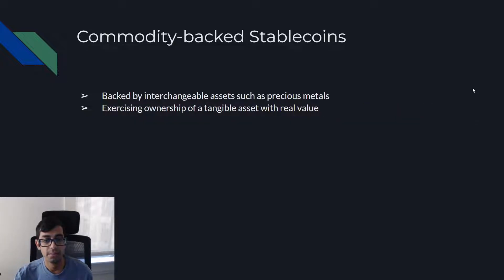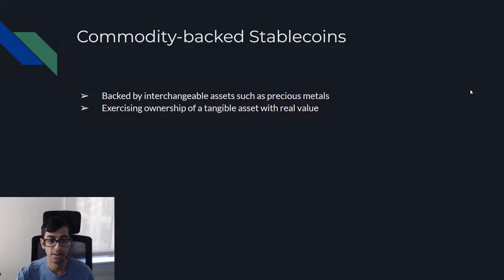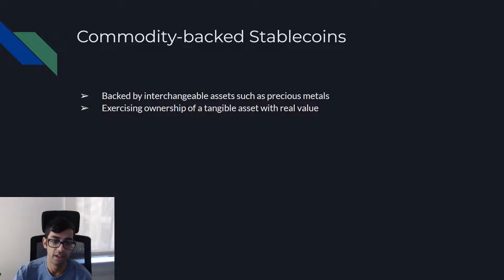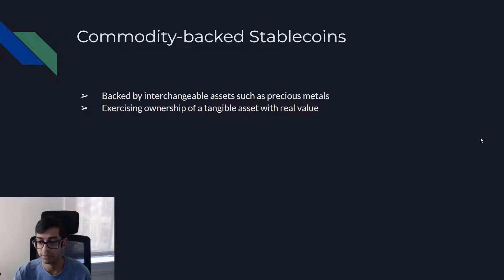Commodity-backed stablecoins are backed by interchangeable assets such as precious metals, but they can also be backed by other assets outside of precious metals. This way you're exercising ownership of a tangible asset with real value.